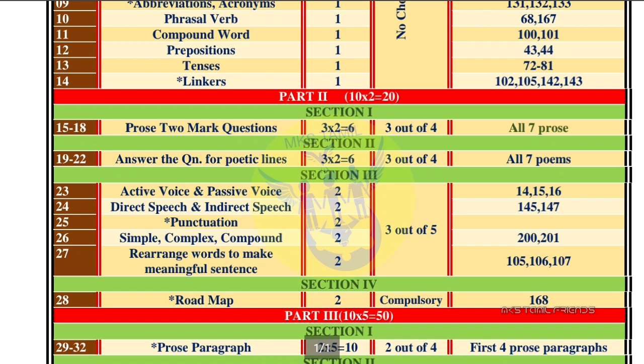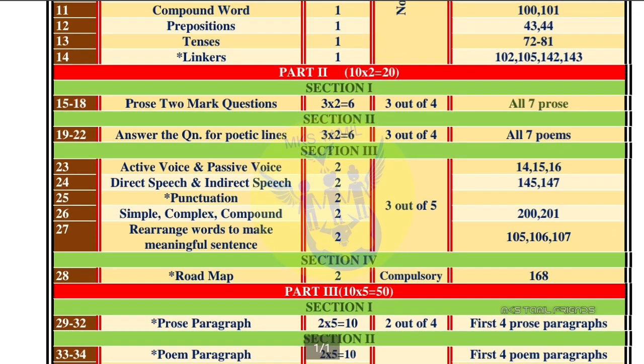Questions 19 to 22 ask you to answer questions on Poetic Lines. You will have 3 poetic lines to answer. All 7 poems are covered. You need to answer from all 7 poems and all 7 poetic lines.